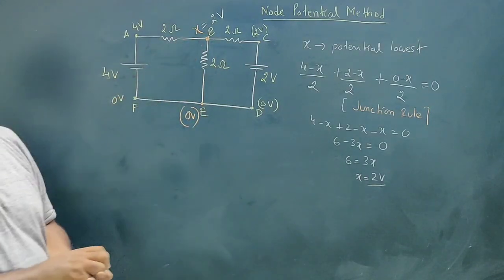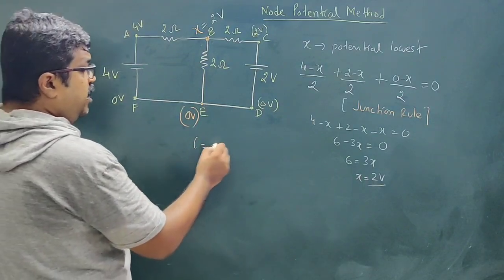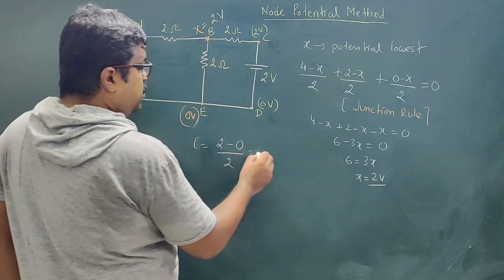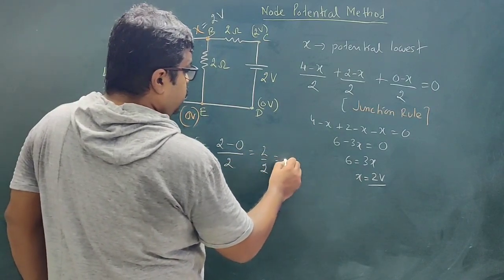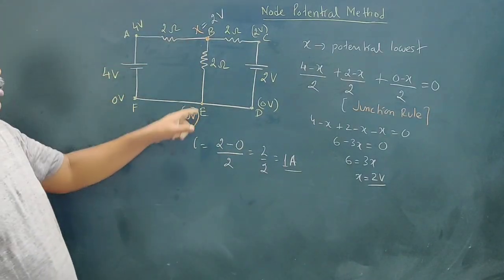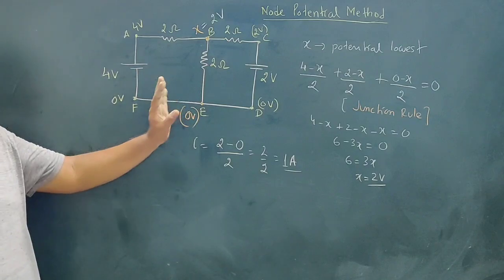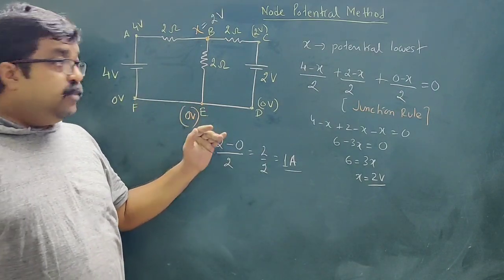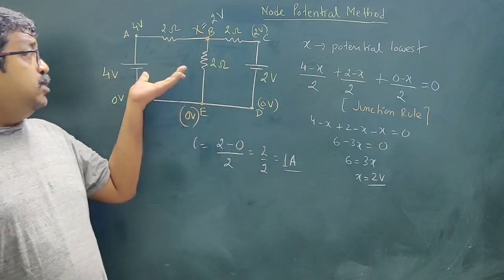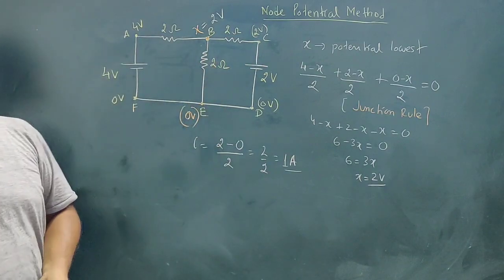So what is the potential difference? The potential difference is 2 minus 0. The current equals potential difference divided by resistance, which is 2 divided by 2, equals 1 ampere. So the current flowing through this 2 ohm part is 1 ampere. Of course, we could also solve this using Kirchhoff's rules, but that would be a bit lengthy. This is how you can use the node potential method to solve such circuits.